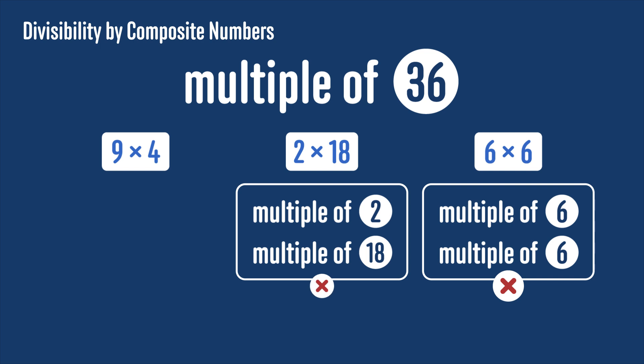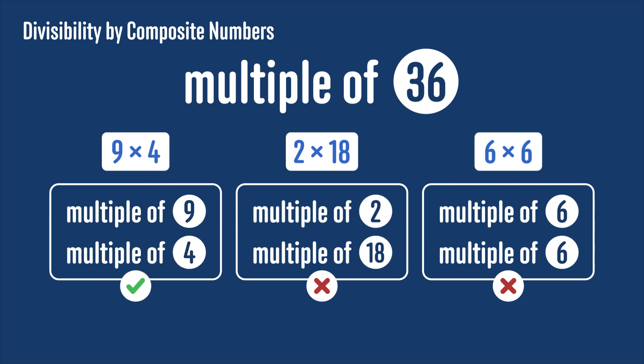We also can't just check 2 and 18, since then we'd have to conclude that 18 is a multiple of 36 because it's a multiple of 2 and of 18, which is clearly wrong. But we can say that any number that's a multiple of 9 and a multiple of 4 is a multiple of 36, so what's the difference?